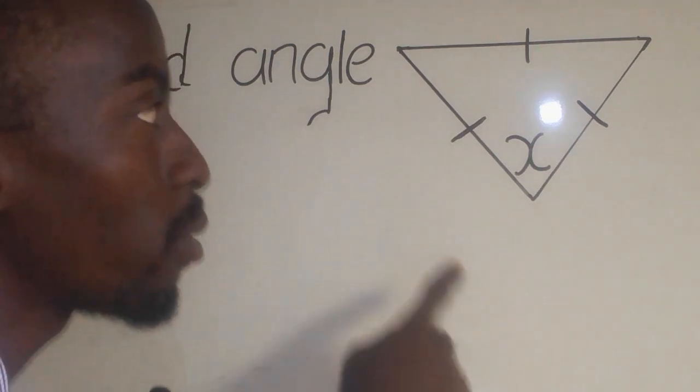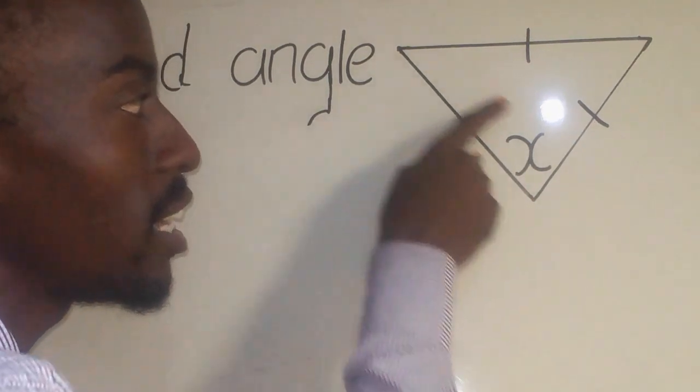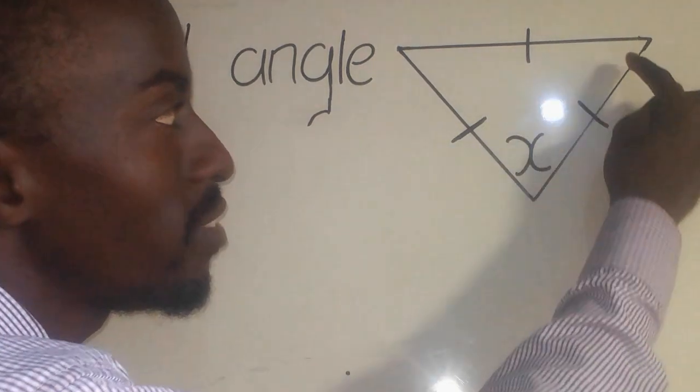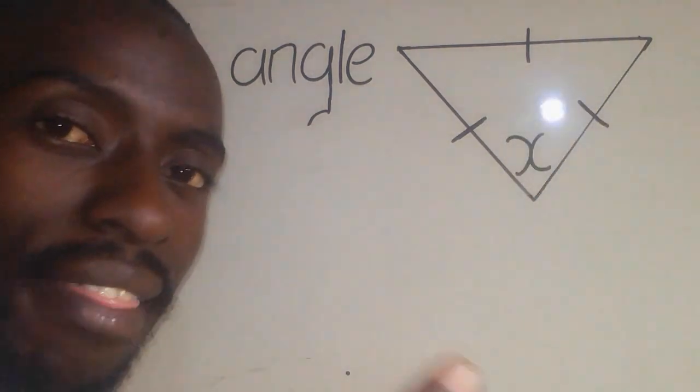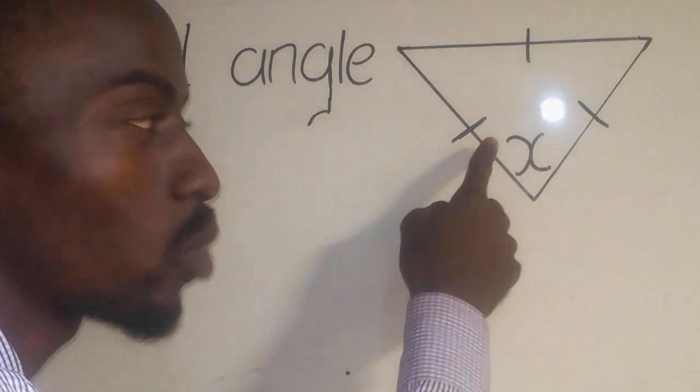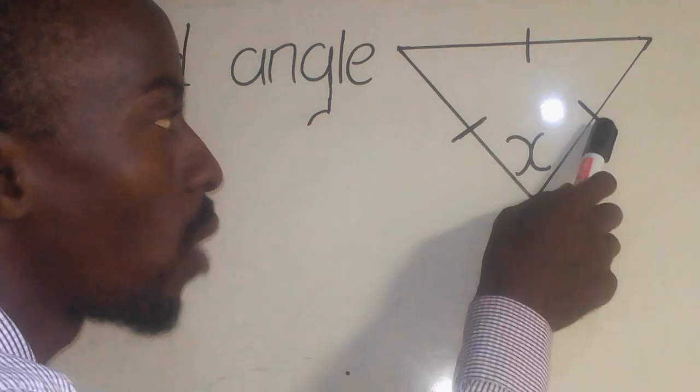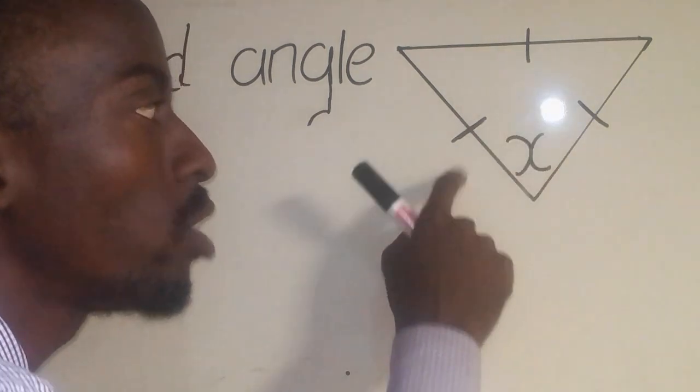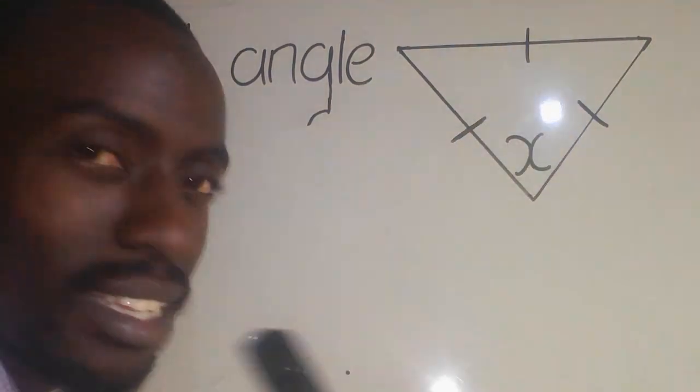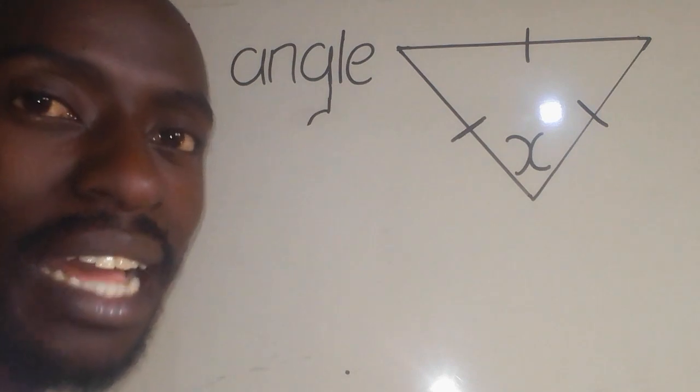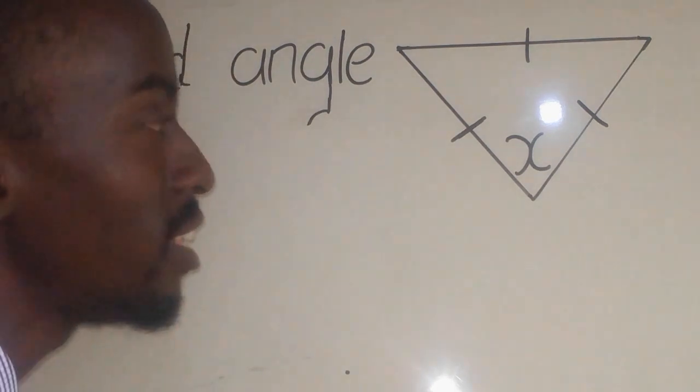For example, if here I have 40, even here I have 40, even there I have 40. The other way of identifying that this one is an equilateral is that there is one line, one line, one line on each side, or two lines, two lines, two lines. That type of triangle is an equilateral triangle.